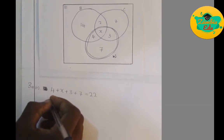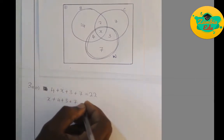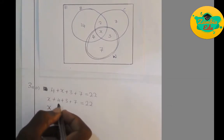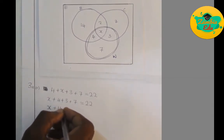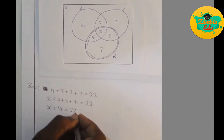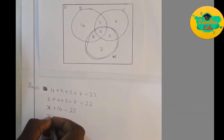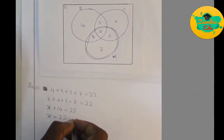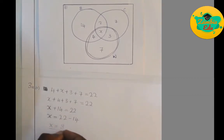Grouping the like terms: X plus 4 plus 3 plus 7 equals 22. So 4 plus 3 is 7, and 7 plus 7 is 14, giving us X plus 14 equals 22. Therefore X equals 22 minus 14, which is 8. That is our answer.